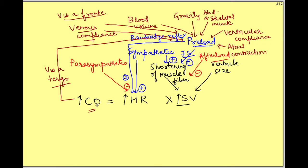Right now we have drawn just one-on-one arrows affecting these four factors — preload, afterload, heart rate, and stroke volume — but there is a lot of crisscross as well. Sympathetic activity affects venous compliance: increase in sympathetic activity causes venoconstriction, which in turn leads to increase in preload. So sympathetic activity is affecting heart rate, stroke volume, as well as preload. It also increases afterload because sympathetic activity causes constriction of arterioles, which are responsible for peripheral resistance.